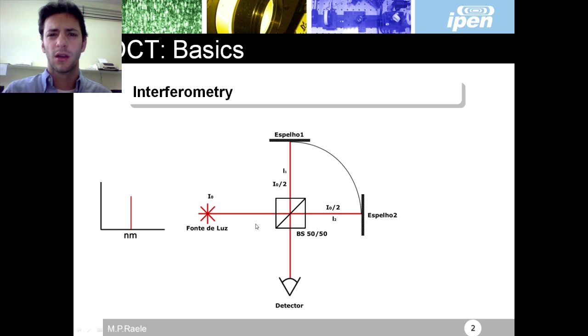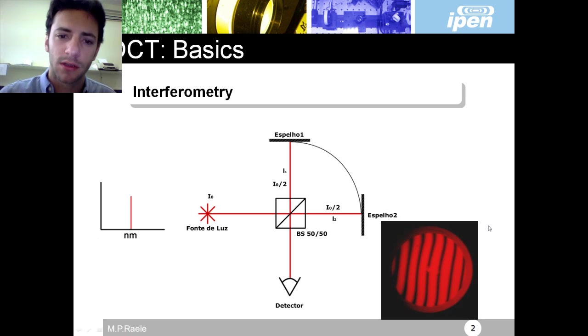The coherence length of this kind of laser is something like 300 meters. This means that if I have a difference of optical path between these two arms of something like 300 meters, I will still have this interference pattern in my detector.